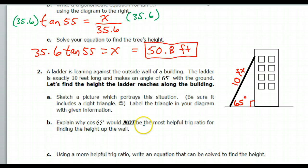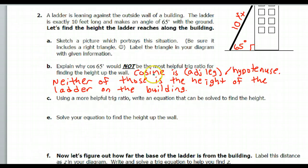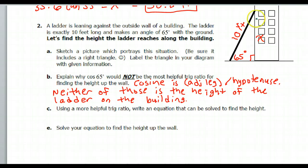Explain why cosine 65 would not be the most useful. Well, cosine is adjacent over hypotenuse, and neither one of those is the height on the building. Neither of those is the height of the ladder on the building. A more useful trig ratio would be the sine function. Because the opposite over hypotenuse, the opposite leg will be the height of the ladder along the building. So this is what I'm calling x right here.